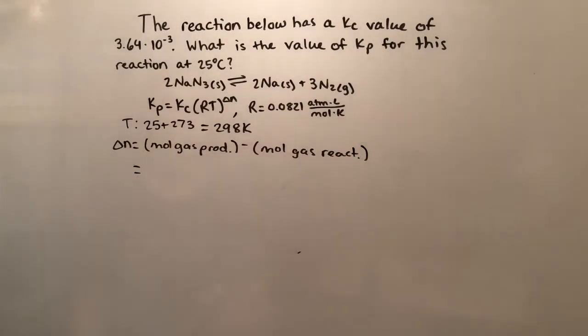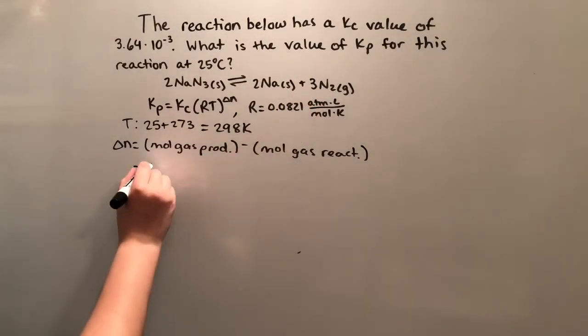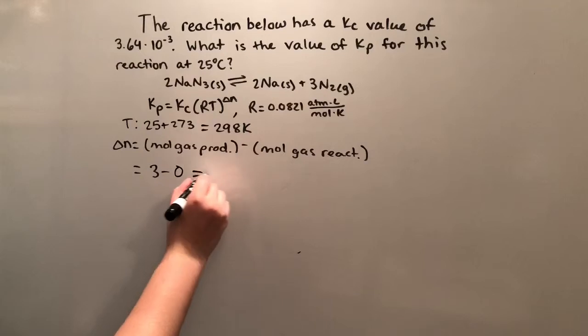So in this equation, the moles of gas in the product is 3. Now there aren't any moles of gas on the reactant side, so we're going to put a 0 here. So our change in N is equal to 3.